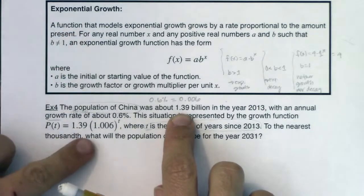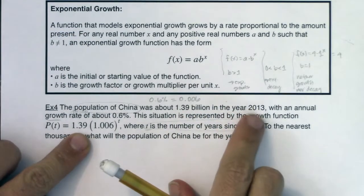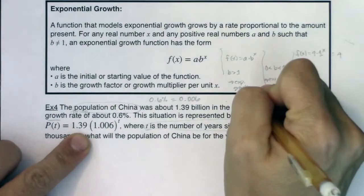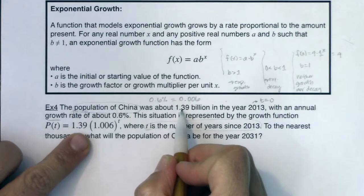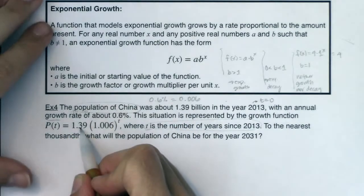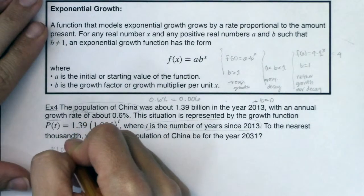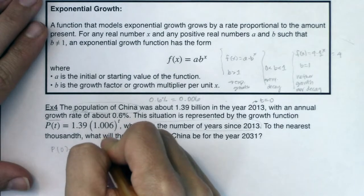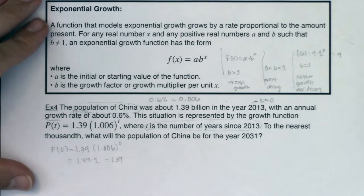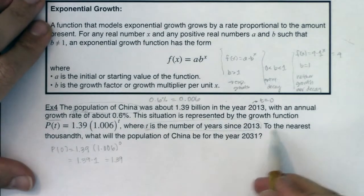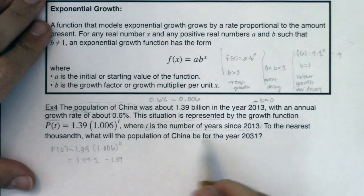You can see my initial value. They told me in 2013, which is going to be my base year. So this is year 0. So in this year, we know t is equal to 0. My initial or my starting value for the function was 1.39 billion. And I just want you to see that play out mathematically. If I plug 0 into this function, I would have 1.39 times 1.006 to the 0. Well, what is 1.006 to the 0? That is 1. What is 1.39 times 1? Well, I'm getting 1.39 back. That is my initial or my starting value of my population.